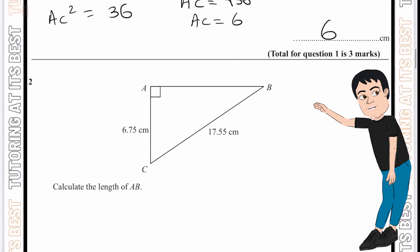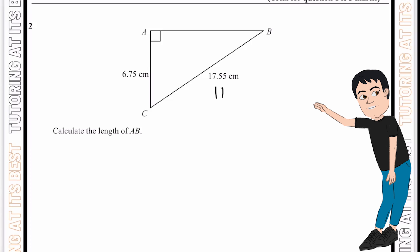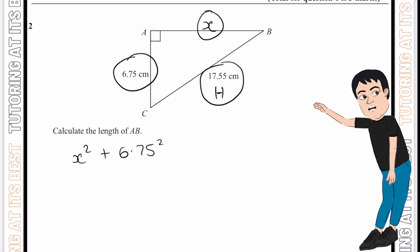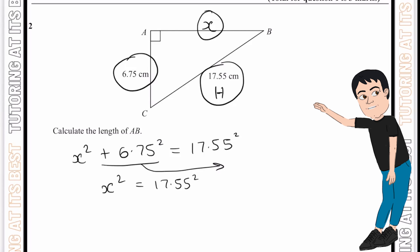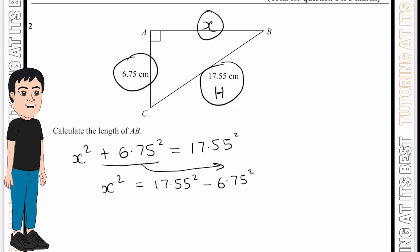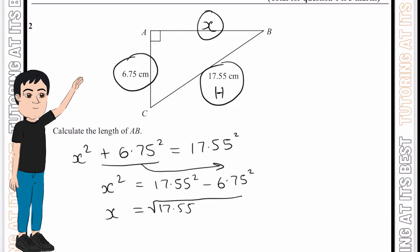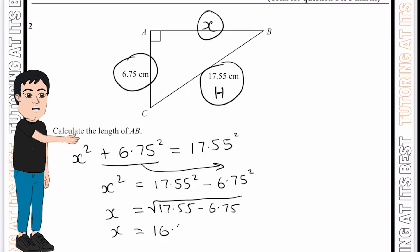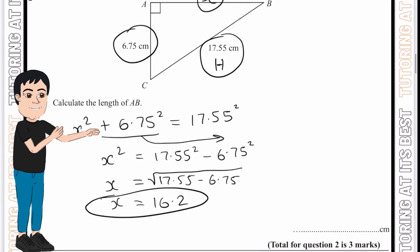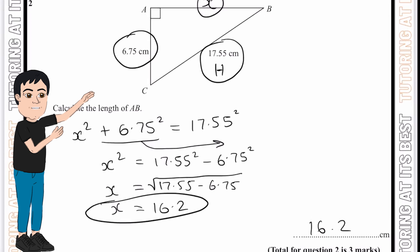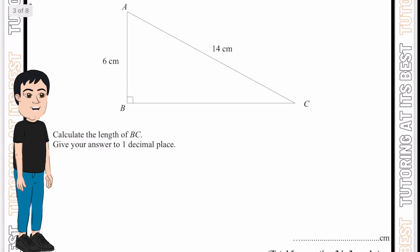Question two: we now have our hypotenuse, but we need to find the length AB, which I'll label as x. We know that b² + c² = a², so x² + 6.75² = 17.55². Making x the subject, the + 6.75 becomes − 6.75. Taking the root gives us x = 16.2, and that is our answer.